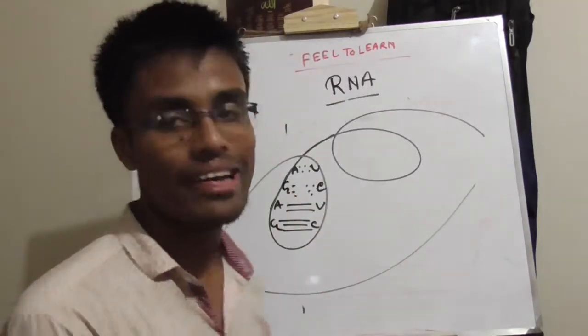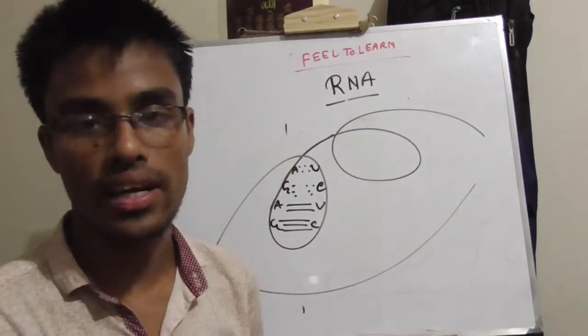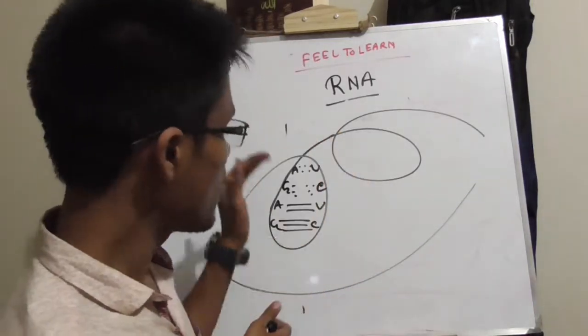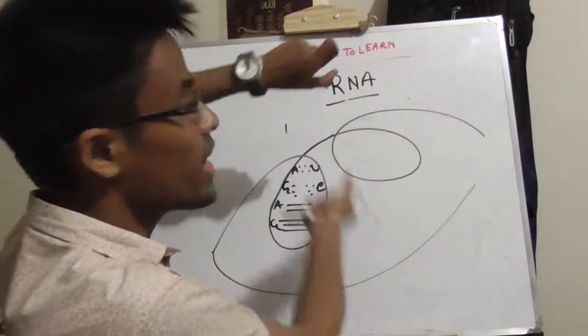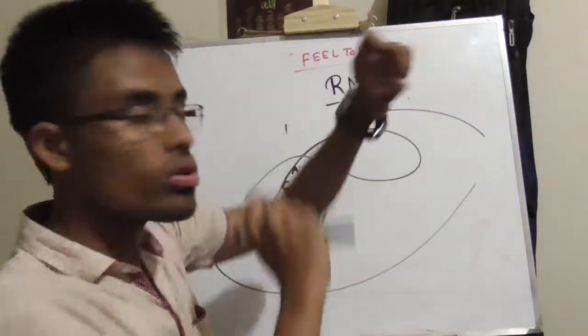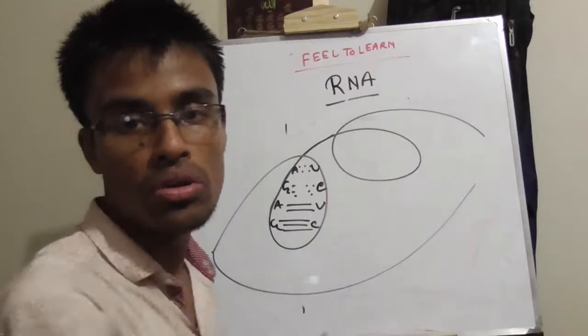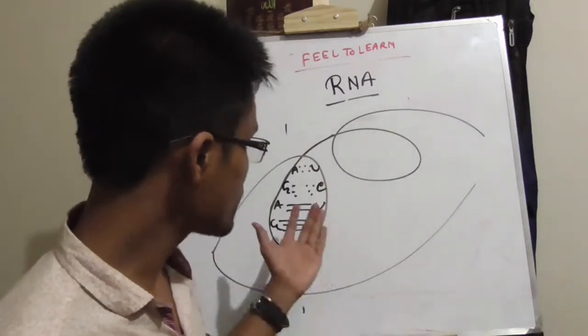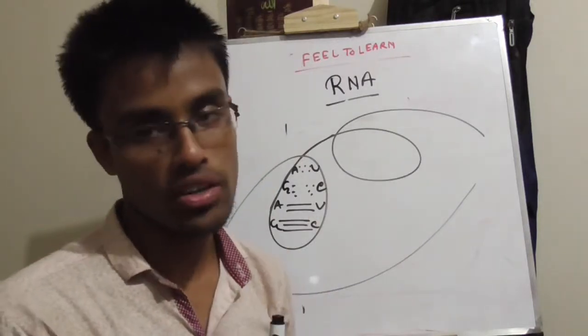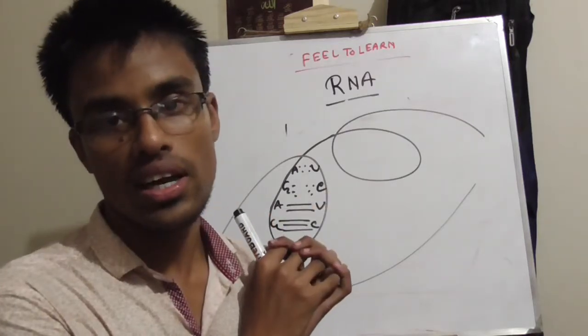RNA basic is this. In RNA there is a helix. Adenine pairs with uracil, guanine, cytosine. It forms a helix. Two hydrogen bonds, three hydrogen bonds. So this is RNA basic. RNA structure.